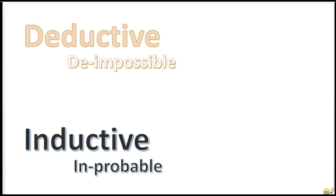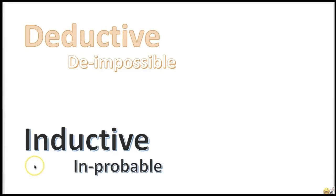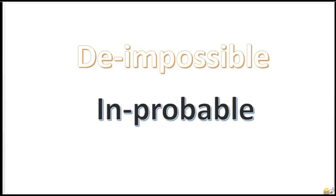Now, what's the difference? As you've learned in the last videos, deductive arguments — if you assume that the premises are true, then it would be impossible for the conclusion to be false. In inductive arguments, if you assume the premises are true, it would be improbable that the conclusion is false.